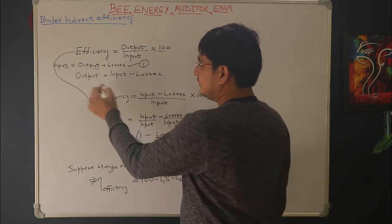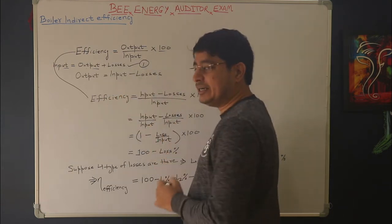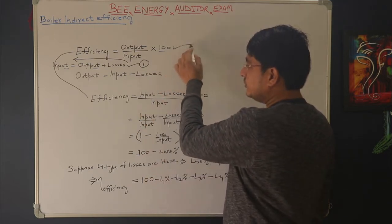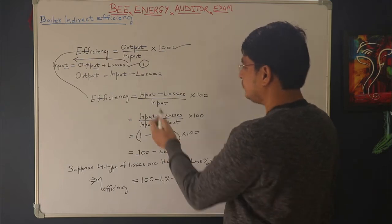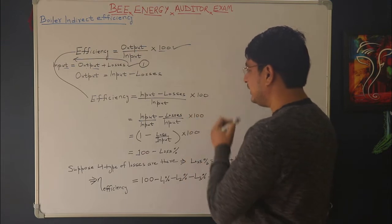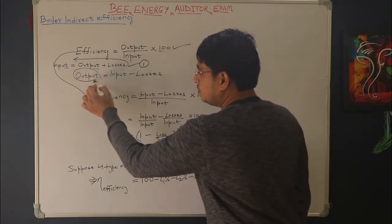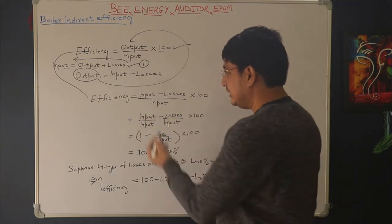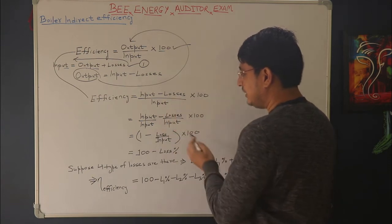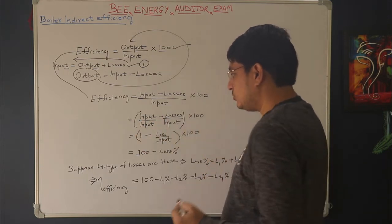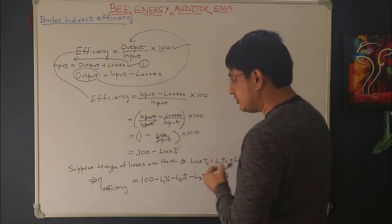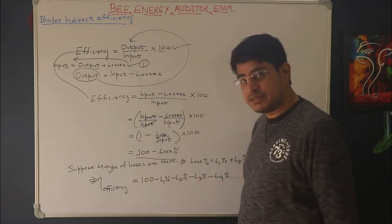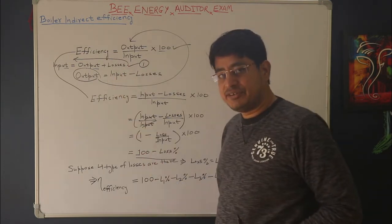I can rewrite Equation 1 as: output = input − losses. Substituting this into the efficiency definition: efficiency = (input − losses) / input × 100, which simplifies to 1 − (losses / input) × 100, and finally to: efficiency = 100 − loss percent.